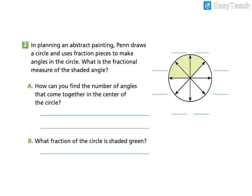We're going to go straight to problem number two. In planning an abstract painting, Penn draws a circle and uses fractional pieces to make angles in the circle. What is the fractional measure of the shaded angle?